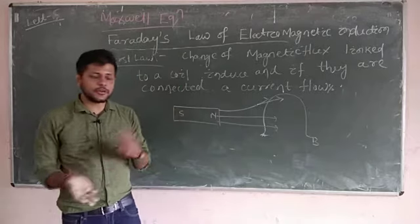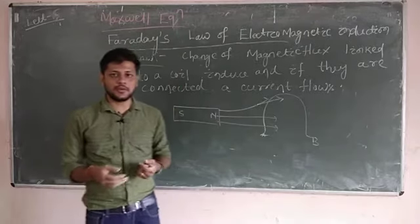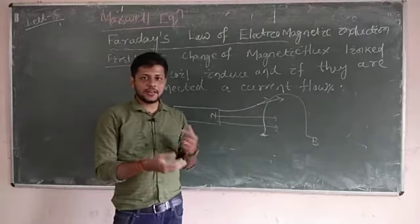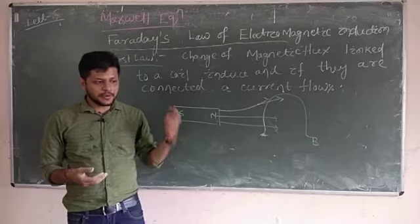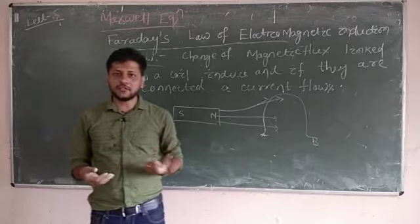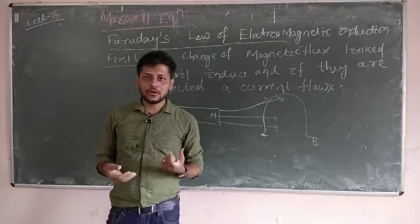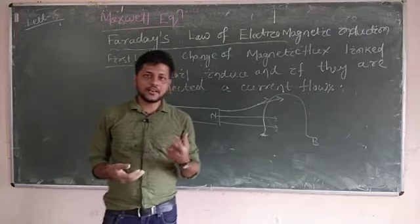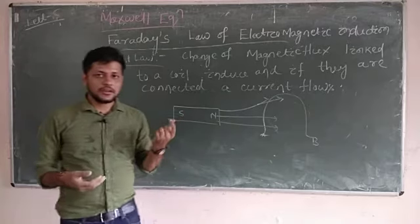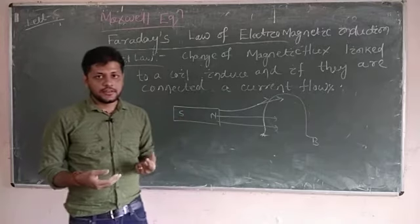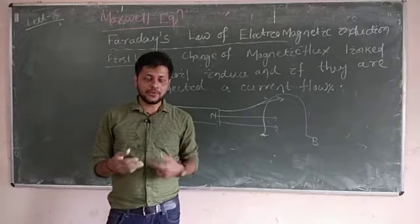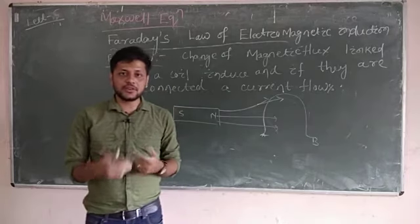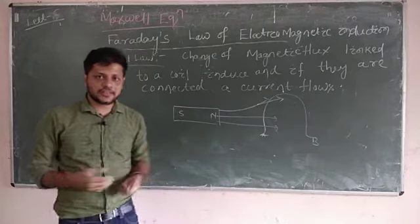Change in electric field produces a current, and that current produces a magnetic field. Because of that magnetic field, a magnetic needle gets deflected in Maxwell's experiment, which I discussed in the last lecture.